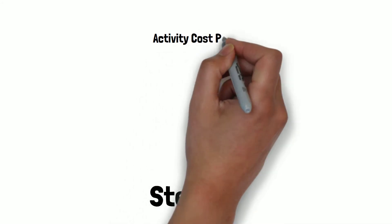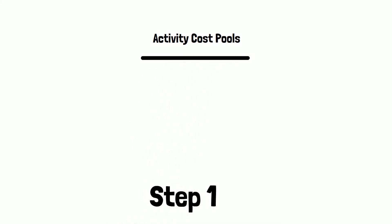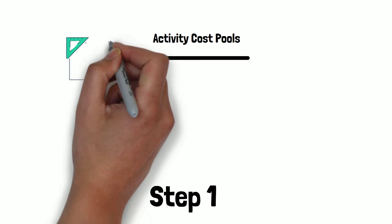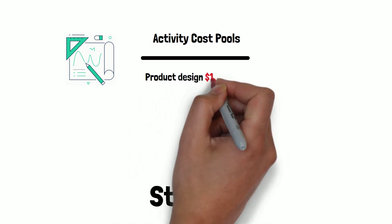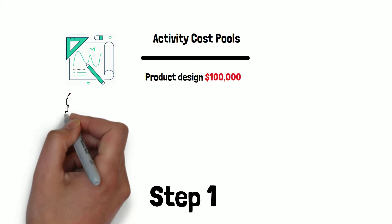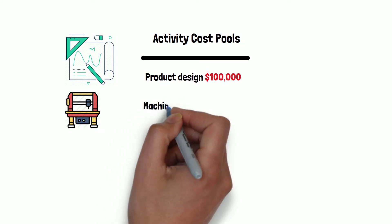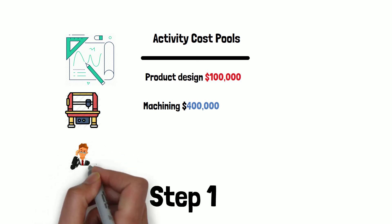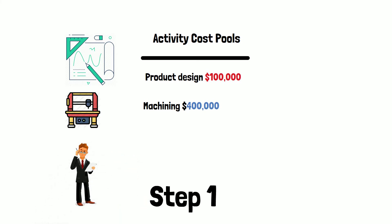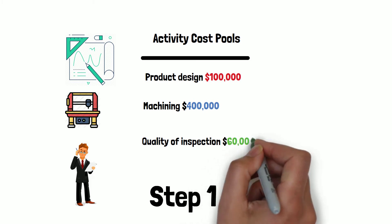There are four steps. Step one, we need to identify what are the activity cost pools. Assume there are three activity cost pools. The first one is product design, with a total cost of $100,000. The second activity cost pool is machining, with a total estimated cost of $400,000. The last one is inspection — quality of inspection — at $60,000.